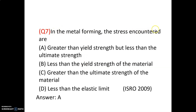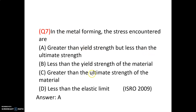Question number 7. In the metal forming process, the stresses encountered are greater than yield strength but less than ultimate strength, less than yield strength, greater than ultimate strength, or less than elastic limit. Metal forming is carried out for ductile materials — the stresses must exceed yield strength to cause forming, but must remain below ultimate strength to avoid failure. So option A is correct: greater than yield strength but less than ultimate strength.